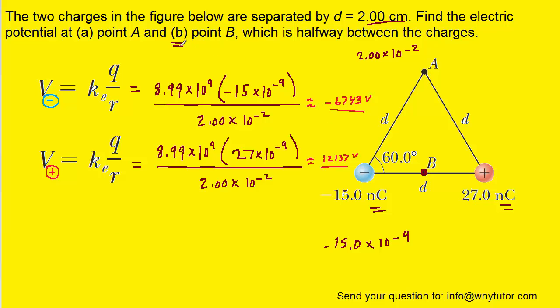Now, for part B of the question, we're calculating the electric potential at point B. It's basically going to be the same thing we just did, except notice that the distance from the negative charge to point B is d divided by 2. Also, the distance from the positive charge to point B is d divided by 2.